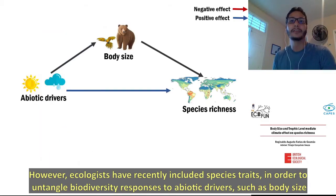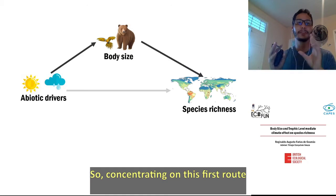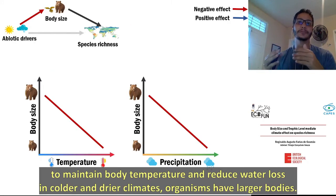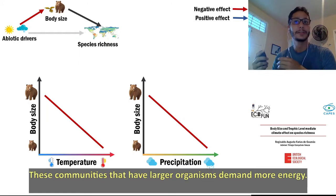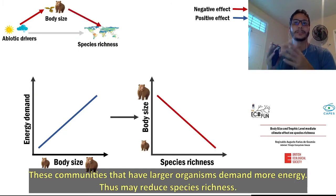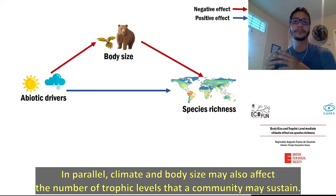However, ecologists have recently included species traits in order to better understand diversity responses to abiotic drivers, such as body size. To maintain body temperature and reduce water loss in colder and drier climates, organisms have larger bodies. These communities that have larger organisms demand more energy, thus may reduce species richness. In parallel, climate and body size may also affect the number of trophic levels that a community may sustain.